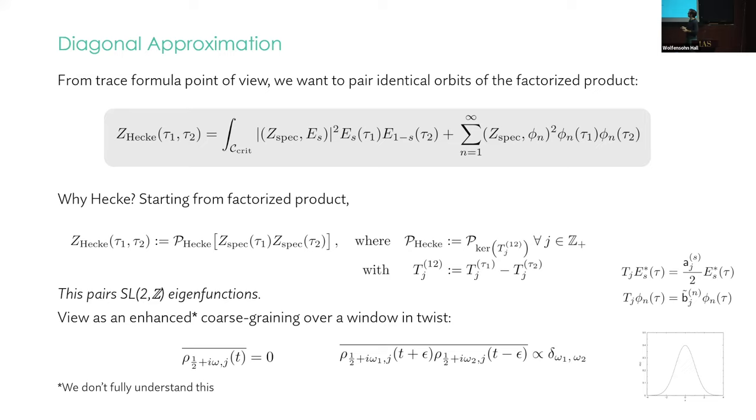The reason is that if you want to get this from the factorized product, you can get it by projecting onto the kernel of the difference of Hecke operators acting on these eigenfunctions. I'm not going to spend too much time talking about this, although I think it's interesting to people of a certain taste. The Hecke operators acting on these eigenfunctions spit out Fourier coefficients of spin J, where J labels the Hecke operator. And so if we insist that the action of this thing vanishes on the factorized product, well that pairs the SL(2,Z) eigenfunctions.